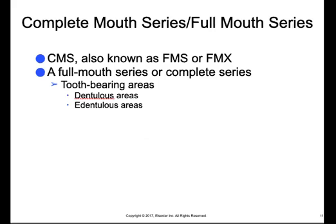A complete mouth series, also known as a full mouth series — abbreviated CMS, FMS, or FMX — is defined as a series of intraoral dental images that show all of the tooth-bearing areas of both jaws. Tooth-bearing areas are the regions of the upper and lower jaw where all 32 teeth are usually located, and include dentulous areas which exhibit teeth as well as edentulous areas where teeth are no longer present. This series can include only periapicals, or be a combination of periapicals and bitewings.